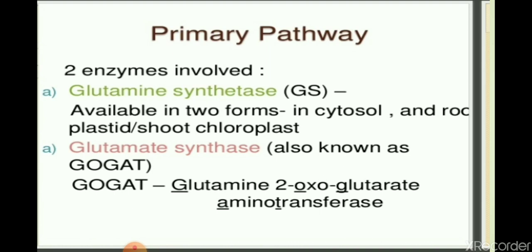The full form of GOGAT is glutamine-2-oxoglutarate-amino-transferase. The ammonia is initially assimilated into the amide position. The enzyme glutamate synthetase carries out the transfer of the amide nitrogen to 2-oxoglutarate to yield glutamate.